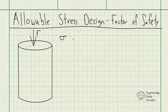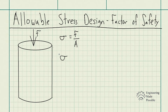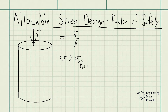We can calculate the stress of this column as force per unit area. When designing a column to support a maximum load, we don't want the stress within the material due to the external force to exceed the yield strength. The yield strength is when the material starts to plastically deform — that's what we mean by failure.